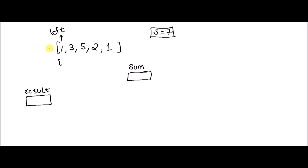We'll be solving this with the help of two pointers. The first pointer is the left pointer, initially pointing at the zeroth index. The right pointer will be our loop variable i, so i will be our right pointer and left is our left pointer. I've taken the input array, suppose s is 7 in this case. There is a sum variable that will contain the sum of the current subarray, initially assigned zero, and a result variable that will store our answer.